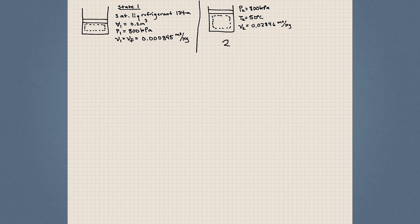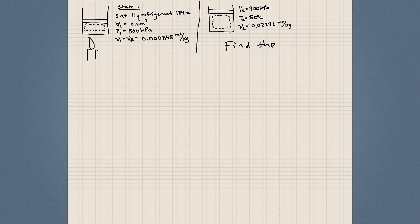In state 2, a candle has added heat to this piston, causing it to expand, so we have more volume in our second case than in our first. The temperature has increased to 50 degrees Celsius, and the piston has moved such that pressure has remained constant from state 1 to state 2. The question in this problem is: find the work done by the system to the surroundings.